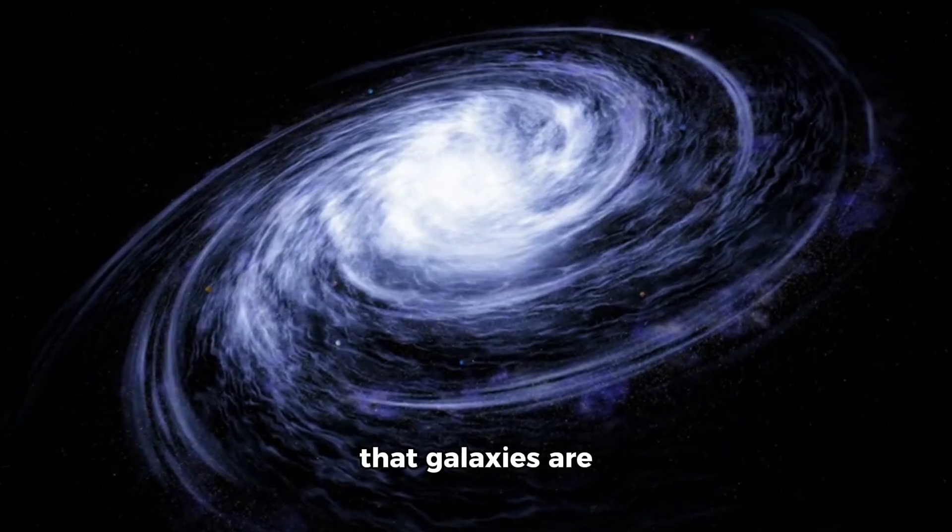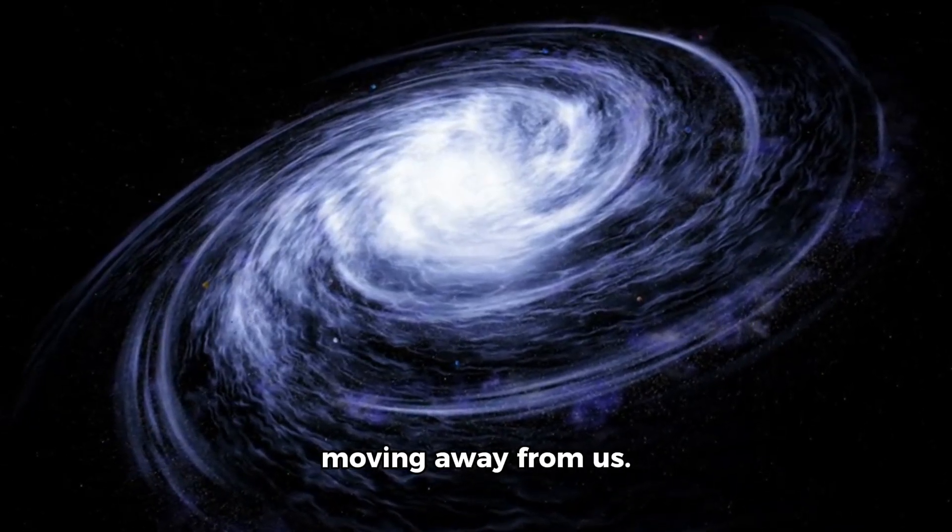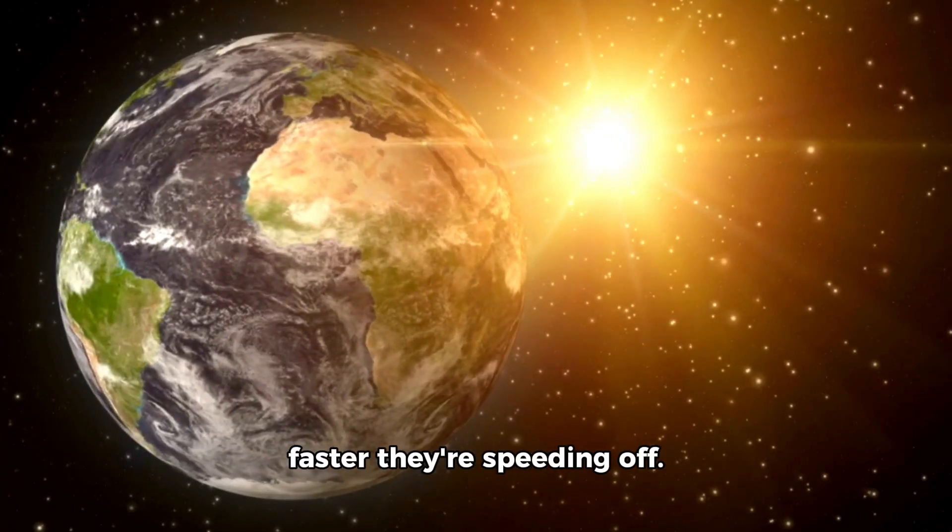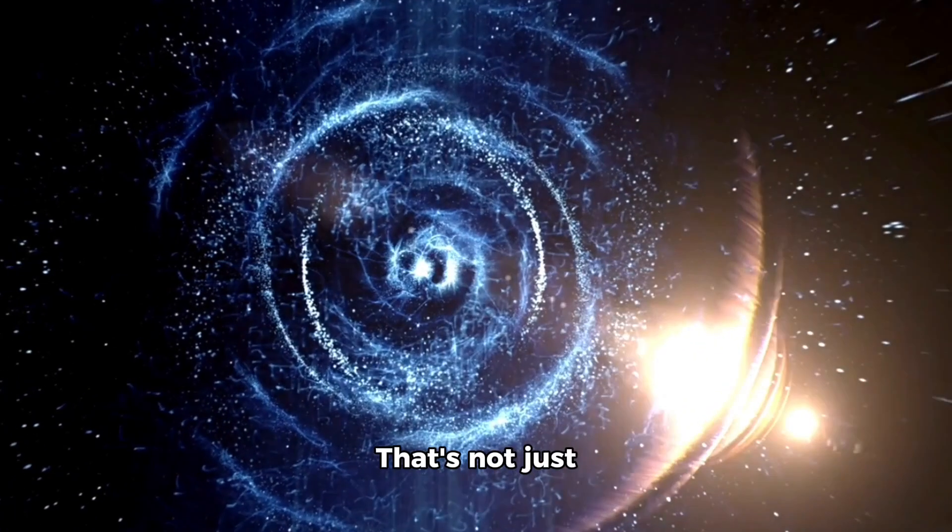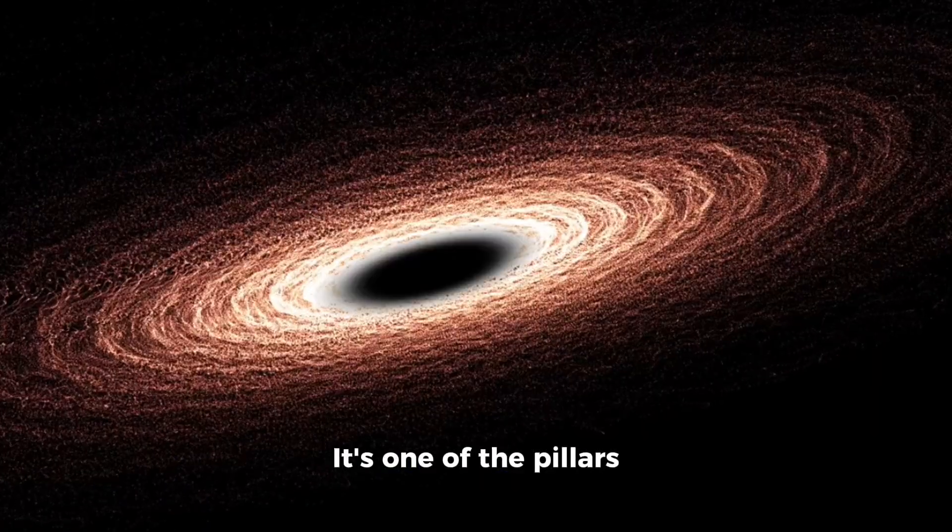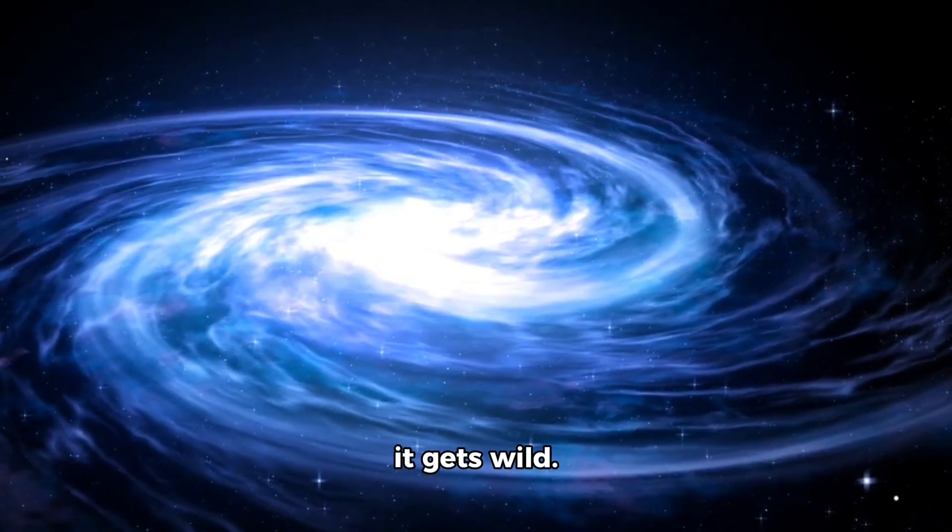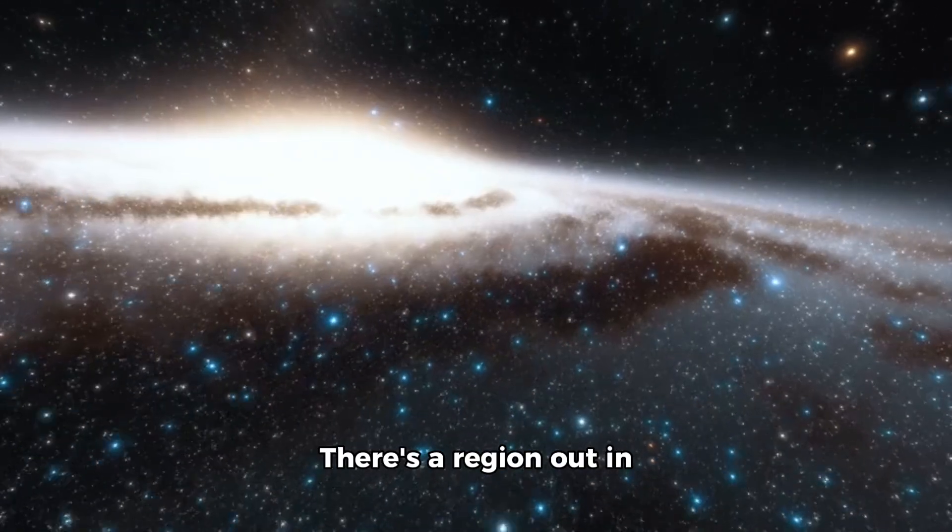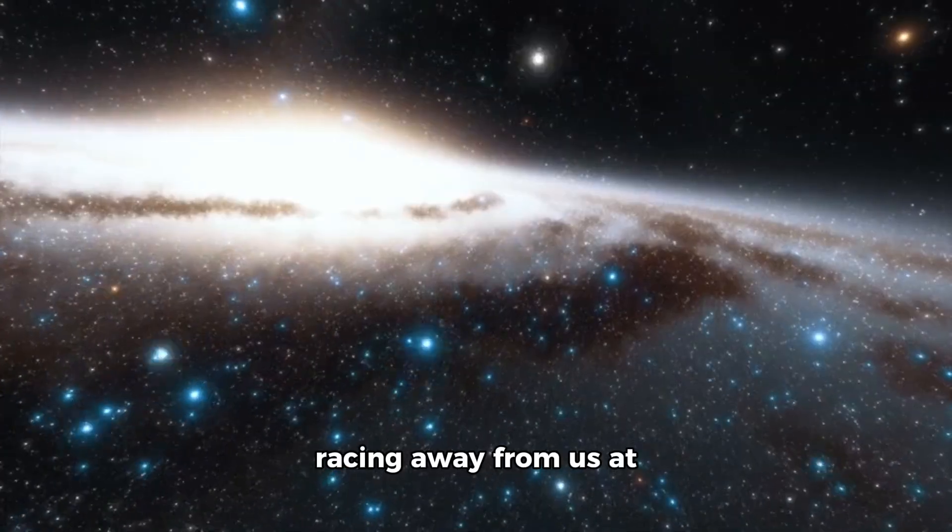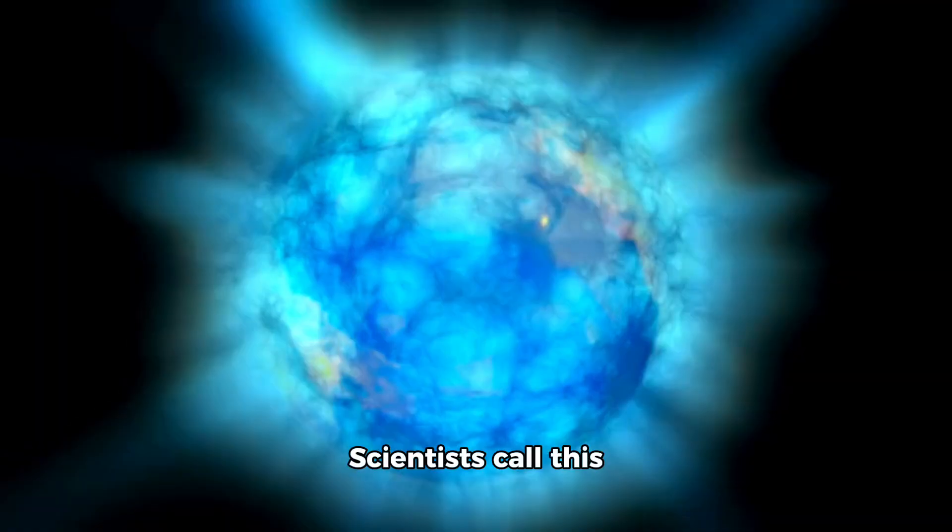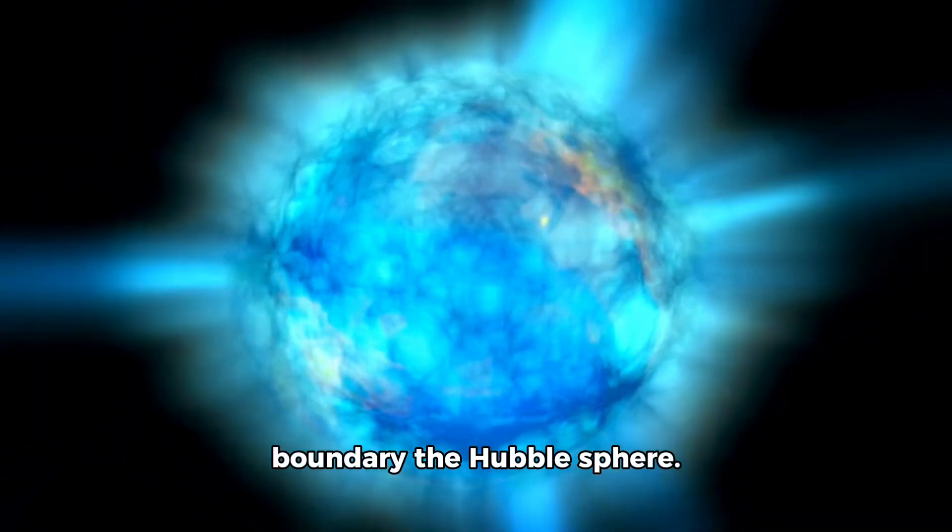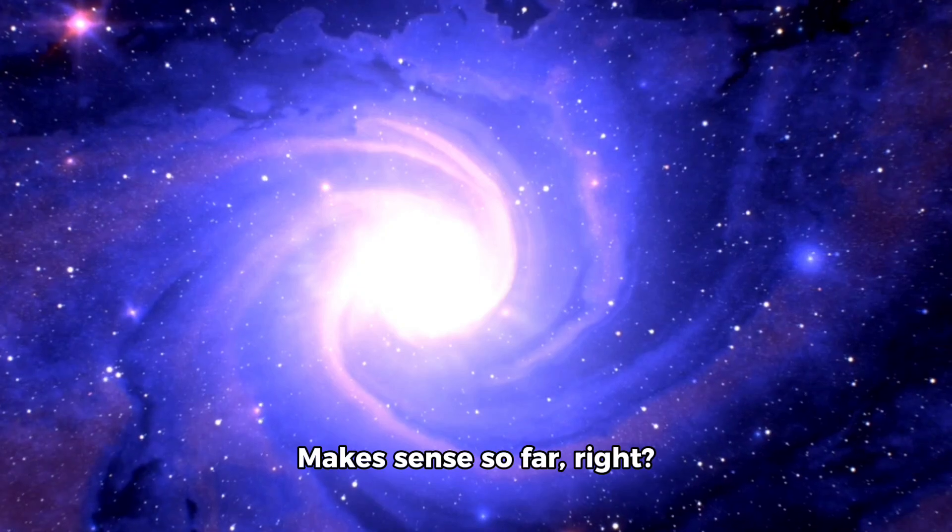You probably know that galaxies are moving away from us. And the farther they are, the faster they're speeding off. That's not just some quirky fact. It's one of the pillars of modern cosmology. Now, here's where it gets wild. There's a region out in space where galaxies are racing away from us at the speed of light. Scientists call this boundary the Hubble sphere.